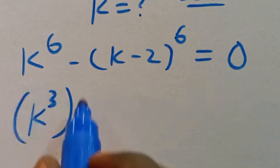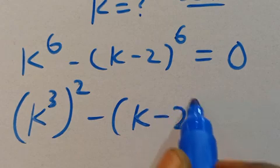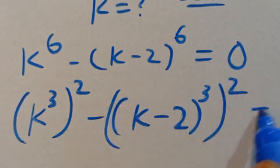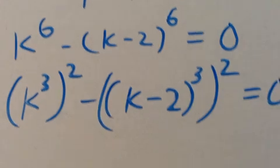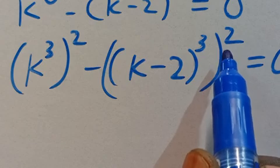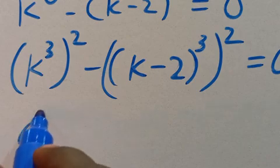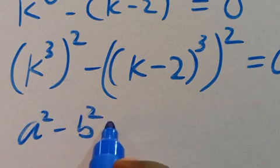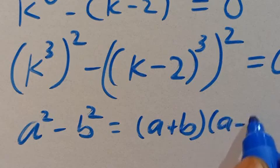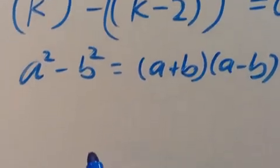From here, let's re-express this as k to the power of three in parentheses to the power of two, minus k minus two in parentheses to the power of three, again in parentheses to the power of two, equals zero. This is a difference of two squares.